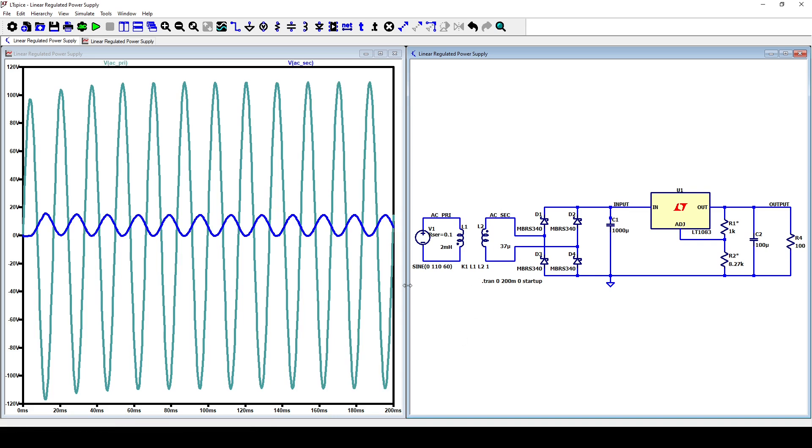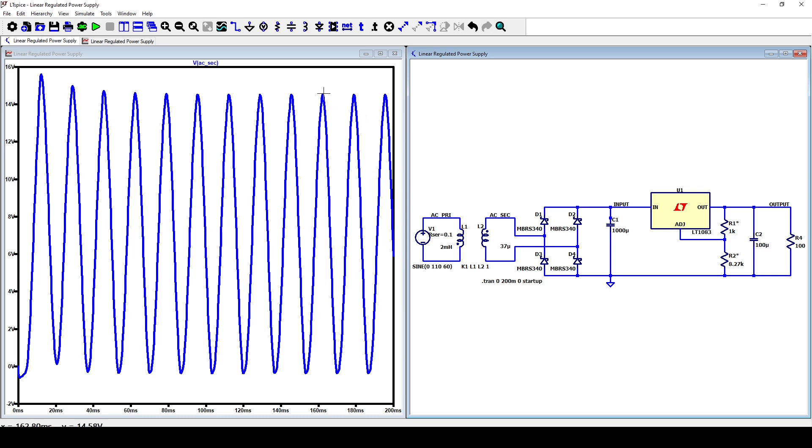You can see the waveform of the voltage at primary and the secondary windings. The transformation is done correctly. You can see that the voltage at the secondary is around 15 volts, as expected during the calculation of the inductances we selected in the schematic.